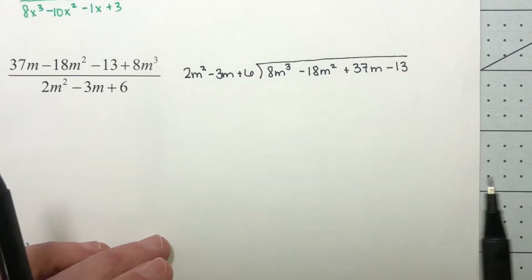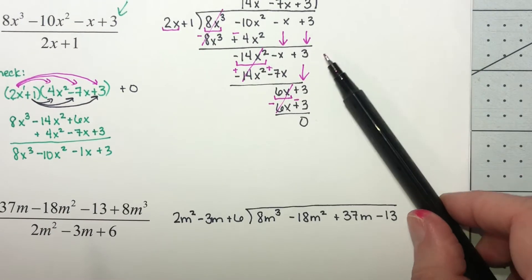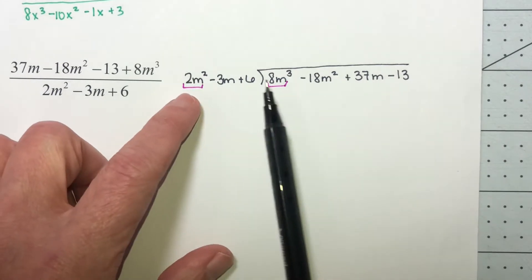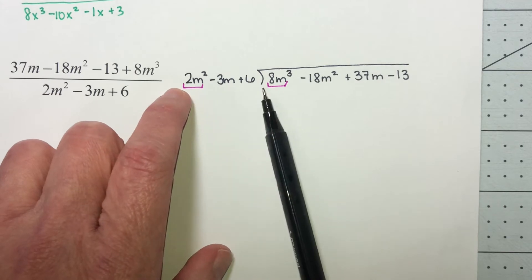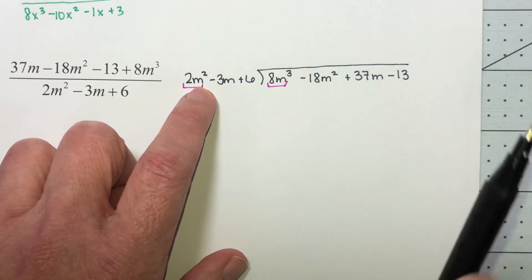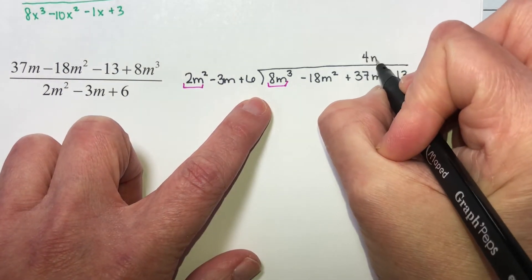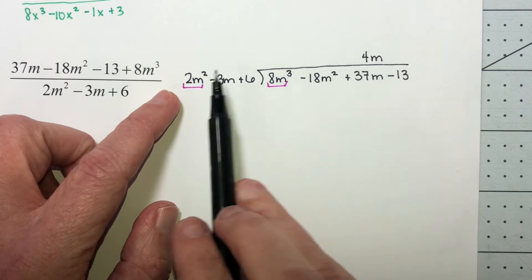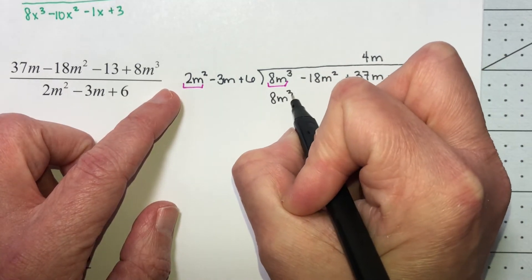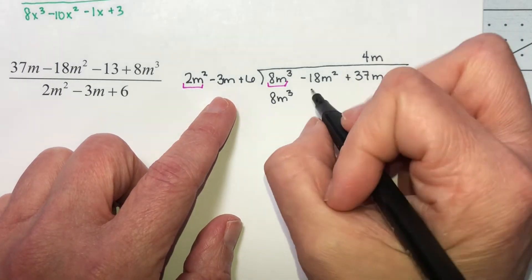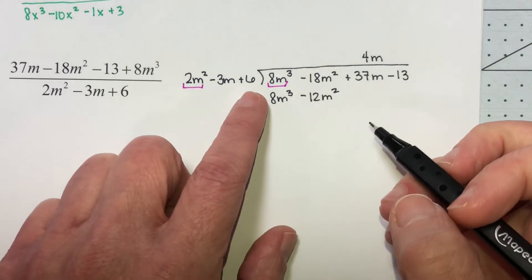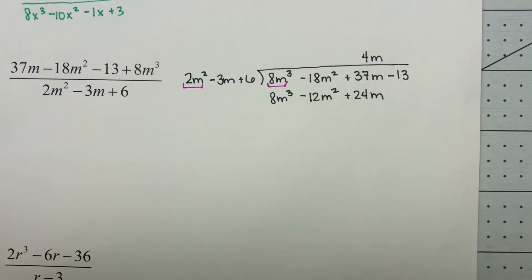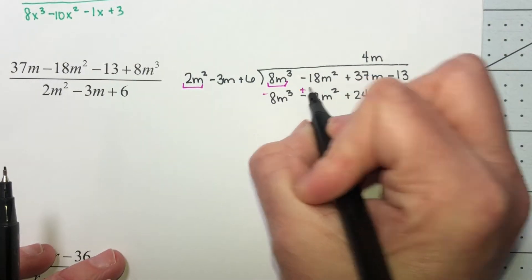Let's concentrate on our first terms again. What do I need to multiply the 2m squared by to get to 8m cubed? I need to multiply by 4m — I have two m's here and three there, so I need one more, making it 4m. Now I take this 4m and distribute it through all of these. 4m times 2m squared is 8m cubed. 4m times negative 3m is minus 12m squared. 4m times 6 is positive 24m. I am subtracting so I need to change every sign.